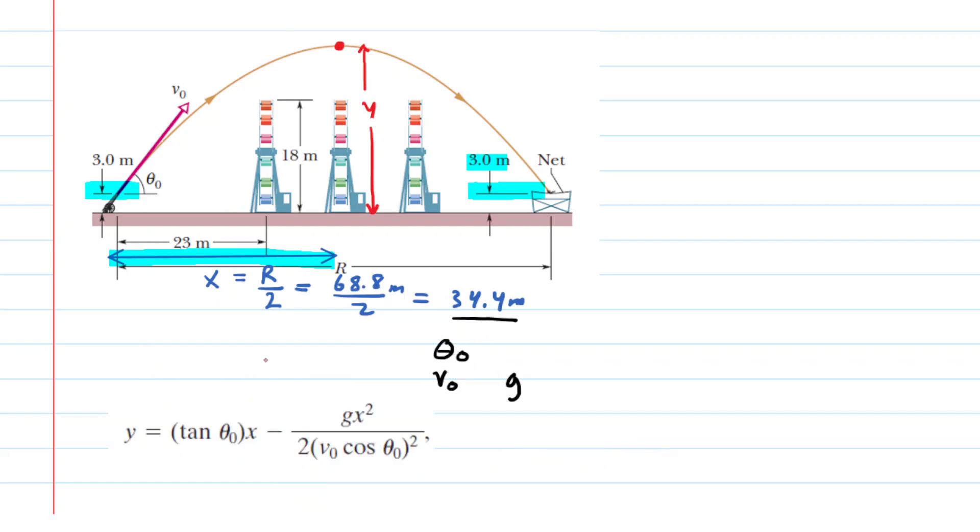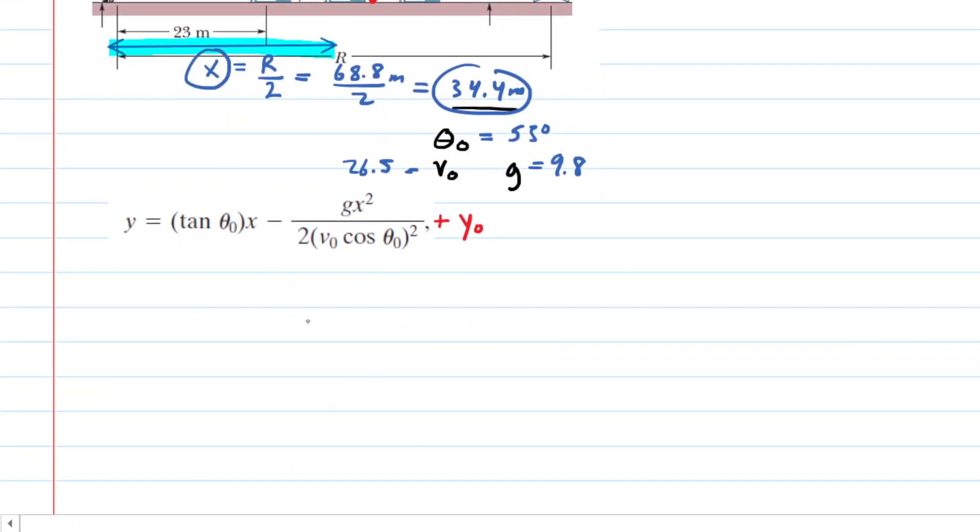Here is the trajectory equation again. Don't forget that we have to add that extra initial height of the acrobat, which was 3 meters. We know the launch angle was 53 degrees, G is 9.8, the initial speed was 26.5 meters per second, and X was 34.4. Let's plug everything in. When you punch that into your calculator, you should get a Y value of about 25.9 meters.